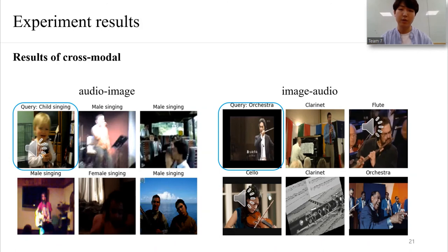This is the result of our experiments. We experimented two types of cross-modal retrieval with test dataset. First one is audio-to-image retrieval. In this example, we can see the image of a child. But when we experiment, we only query the audio of the child singing. Then, we can get most related images in order. You can see the images that men or women sing.